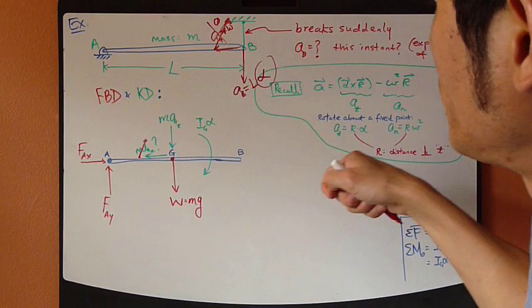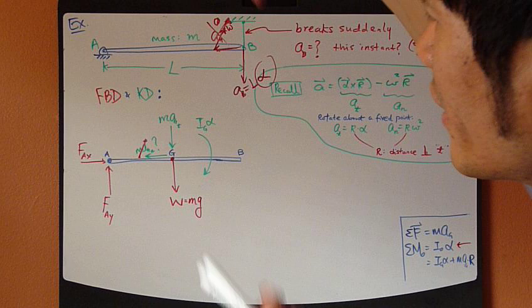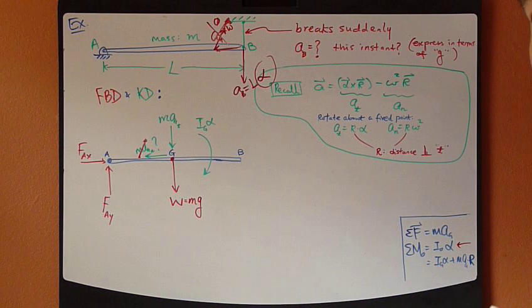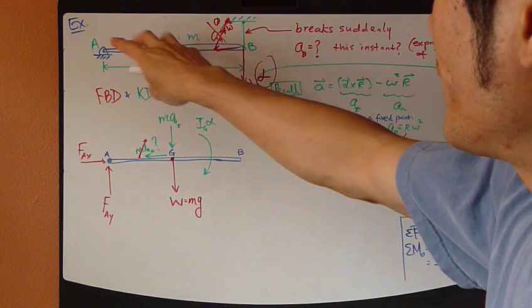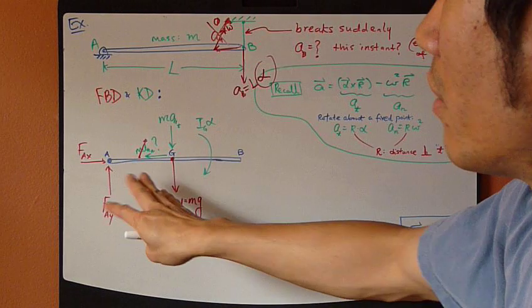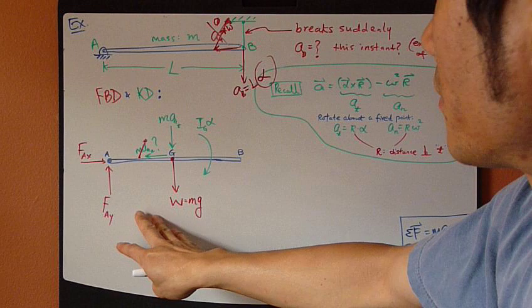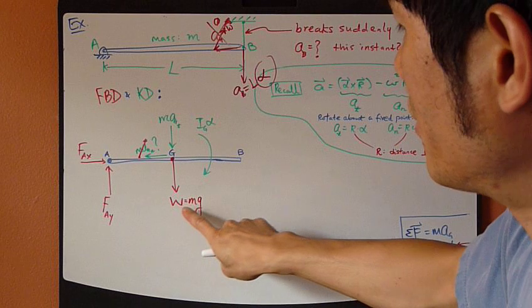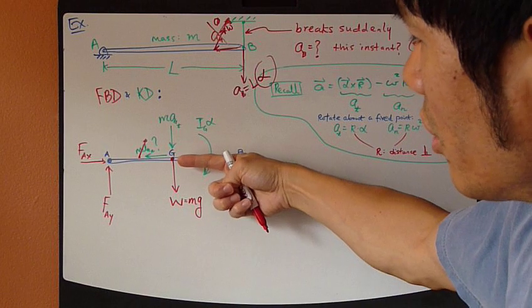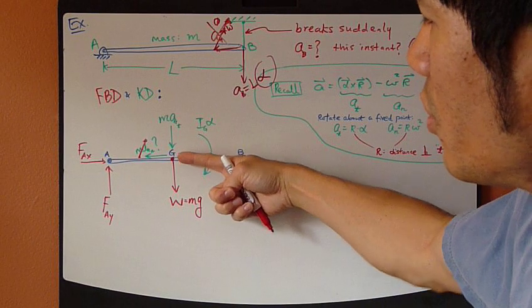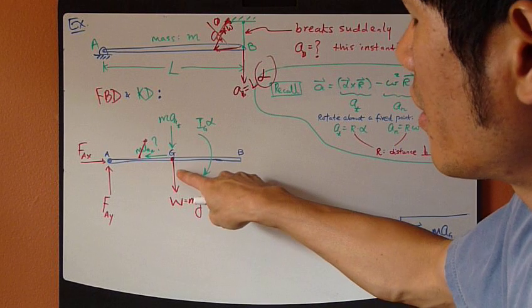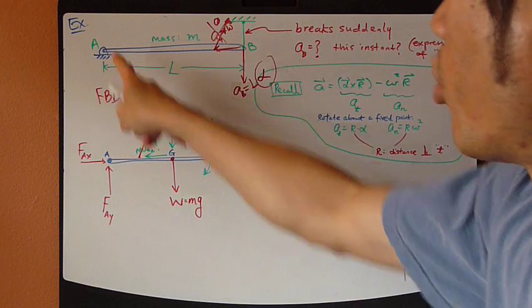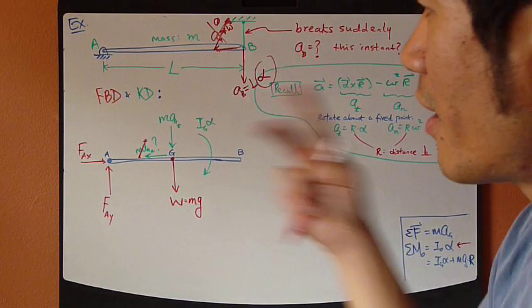And this problem right here, we're not applying any couples. You're not really externally applying any extra moment to it. So, there's no M vector here. Now, the only forces that appear here is the weight, which goes through the center of gravity G, which is right in the middle of the whole rod, as well as the two reaction forces at point A, this pivot point, X and Y direction.